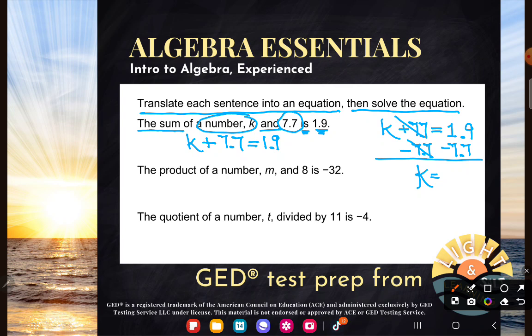So I'm just going to go ahead and do this in my calculator. 1.9 minus 7.7. And I get negative 5.8. And now K is alone. So that is the solution to that equation. K equals negative 5.8. Awesome.